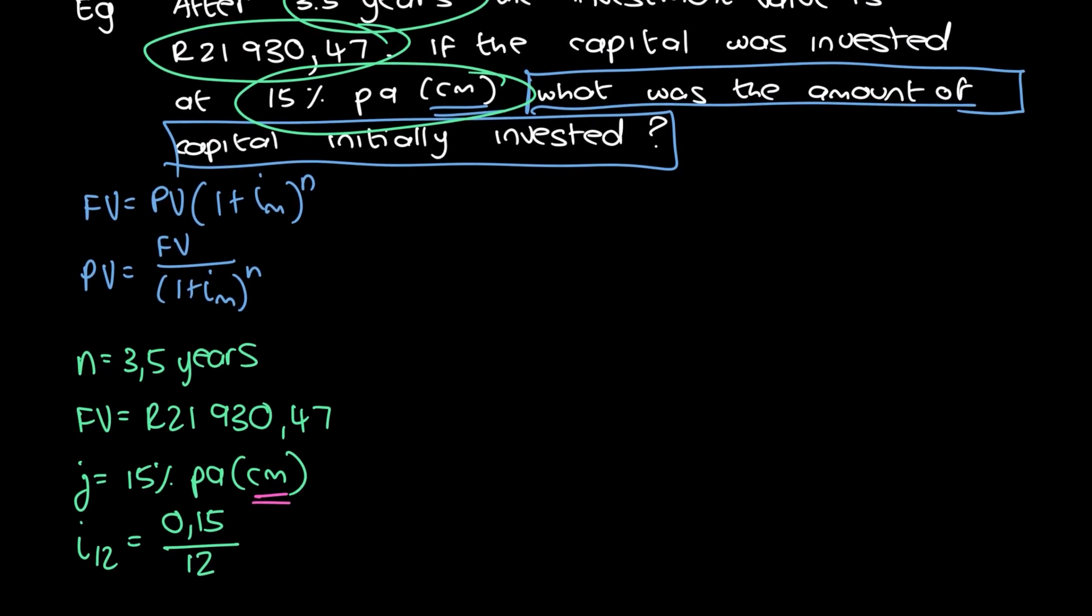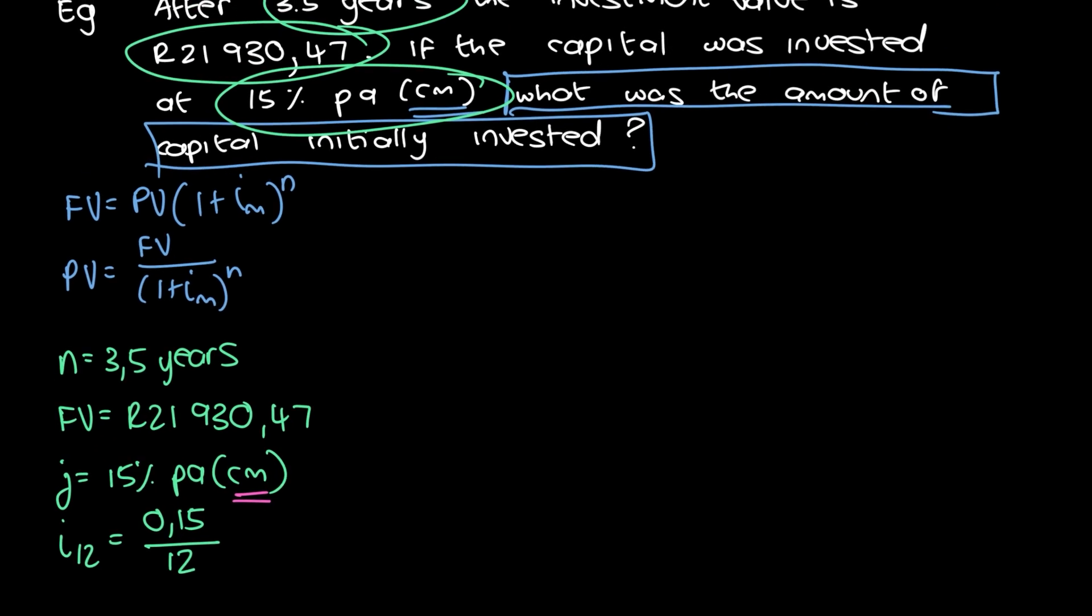And then what was the amount of interest? So we have all information so far. Before we even do anything, we check that the n and the m correspond. So m is in months, n is in years. So we need to convert n into months. So 3.5 times by 12. And that is going to give us 42 months.